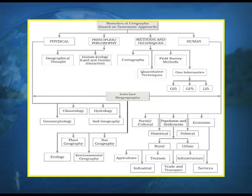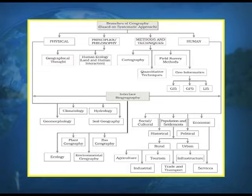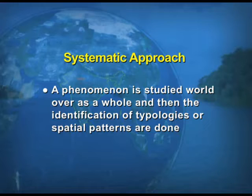If we have a look at this diagram, you can see that the branches of geography based on the systematic approach are: physical geography, principles or philosophy of geography, methods and techniques of geography, and human geography.